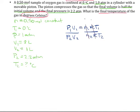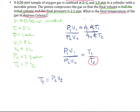Setting up the ideal gas law twice: P1V1 over P2V2 equals T1 over T2 — R and N cancel since they're constant. I need to rearrange this to isolate T2. Be careful with your algebra, keeping track of all the 1s and 2s. Rearranged, T2 equals P2 times V2 times T1 over P1 times V1.